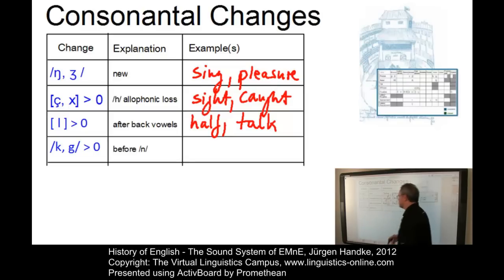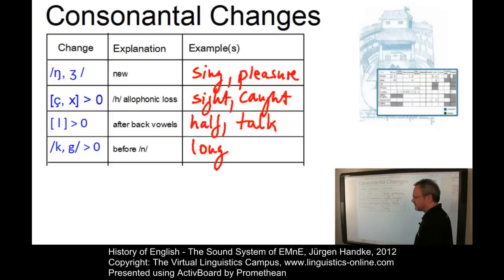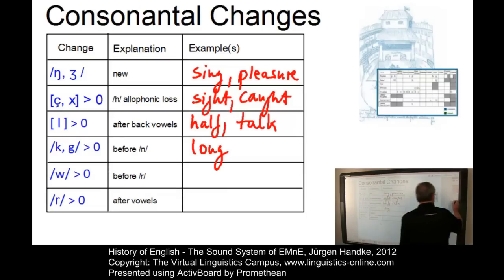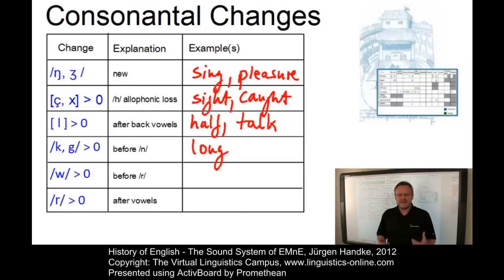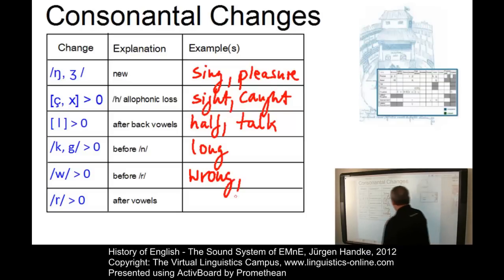Then we could observe a loss of /k/ and /g/ before a final nasal — for example, in words such as 'long', which were formerly pronounced 'long' [with the /g/]. Changes occurring in the 18th century include the dropping of the labiovelar approximant /w/ before the alveolar approximant /r/, so words such as 'wrong' became 'wrong' and 'wrinkle' became 'wrinkle'.